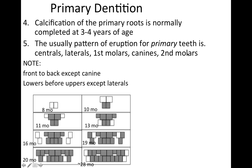This is going to be a pattern we're going to look at for eruption. The usual pattern of eruption for primary teeth is going to be, as a general rule: centrals, laterals, first molars, canines, and then second molars.